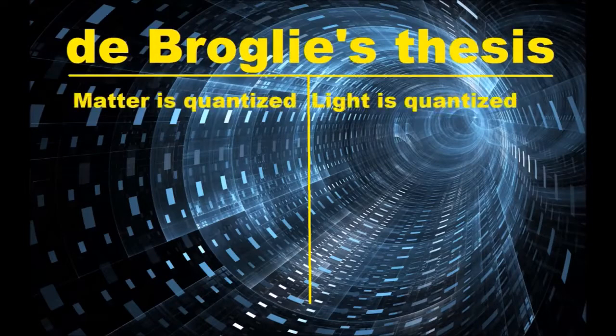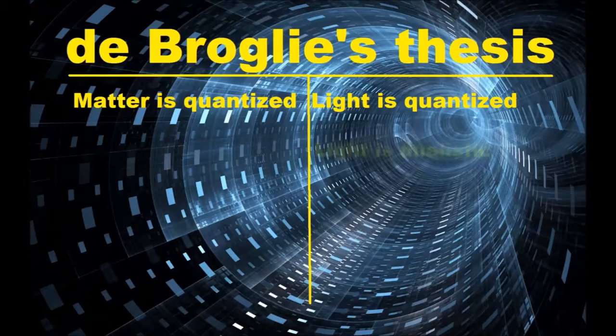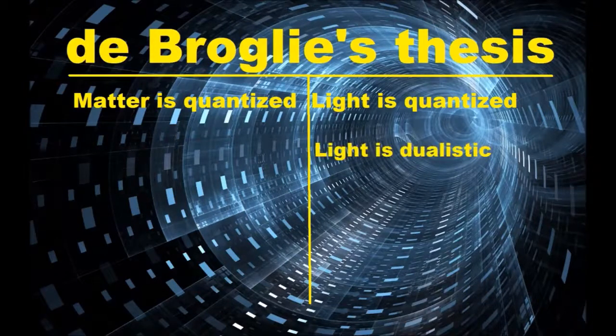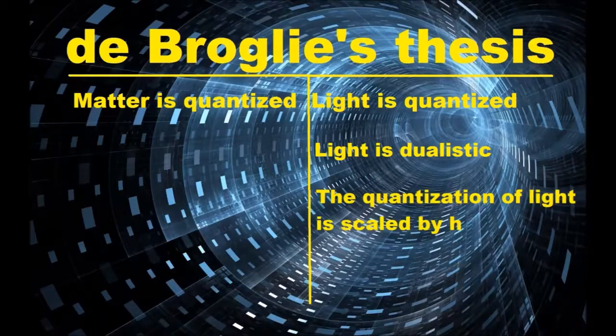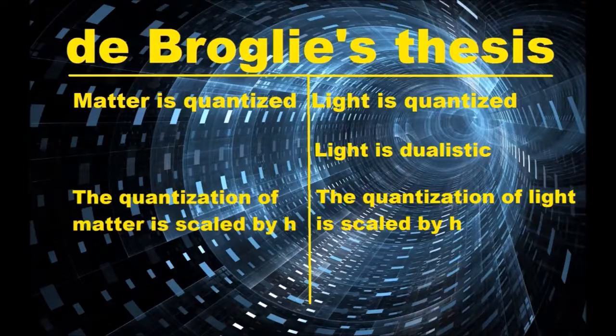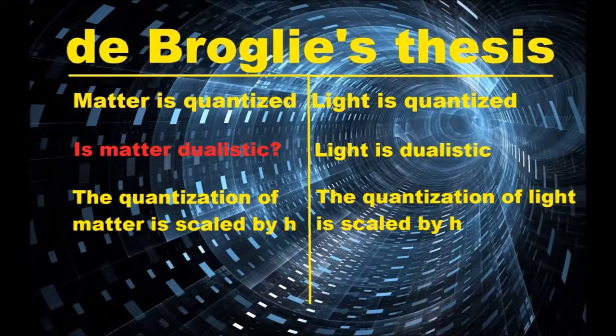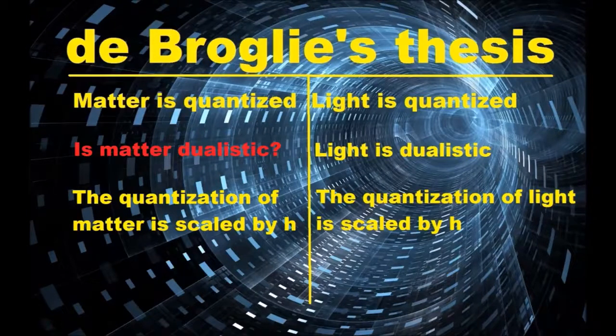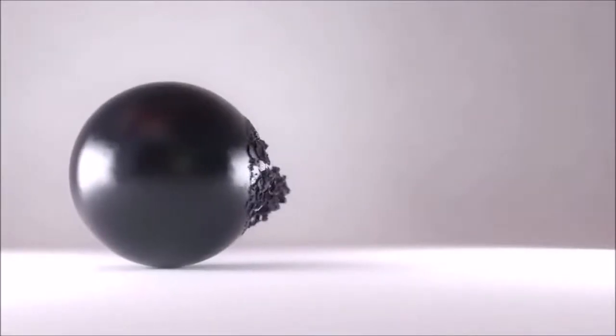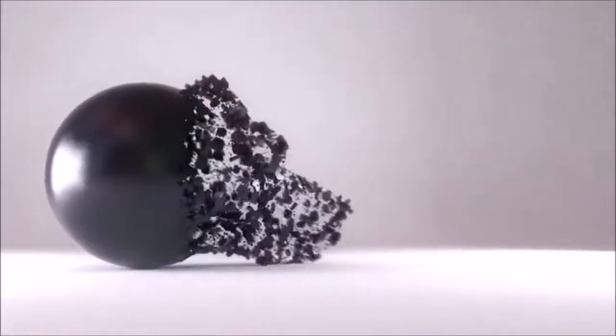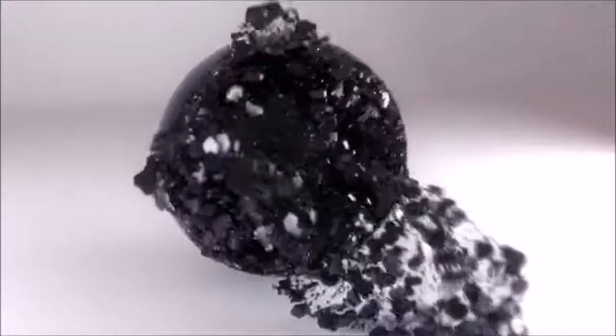Matter was quantized, and light was quantized. Light was dualistic, and in every instance where the particle nature of light emerged, quantization in the form of Planck's constant made an appearance. So what if the same thing was happening with matter? What if the presence of quantization, scaled by Planck's constant, was likewise accompanied by dualistic behavior in matter? What if particles could act like waves? As it turns out, they can. A few years after de Broglie published his hypothesis, diffraction, which is explicitly a wave behavior, was accidentally observed in electrons.